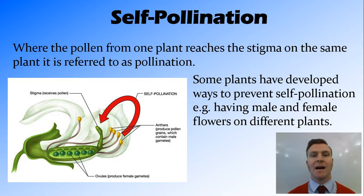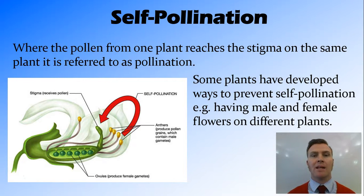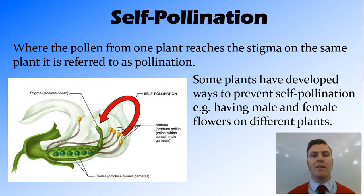If cross-pollination can't happen, self-pollination can at least still produce a seed. However, self-pollination — where the same plant provides both the pollen and the ovum — does not have the same genetic diversity. For this reason, some plants have adapted particular characteristics that stop self-pollination from occurring. One of these is having male and female flowers in different places; for example, if the female parts are at the top of the plant, when the male parts release their pollen, that pollen will go down rather than up, so there's more chance of pollinating another plant.